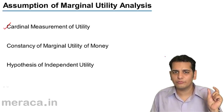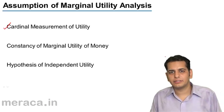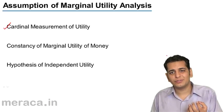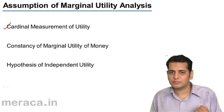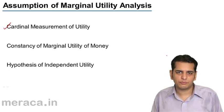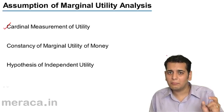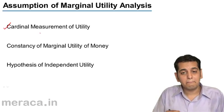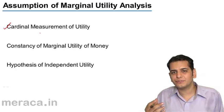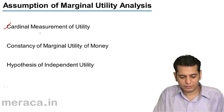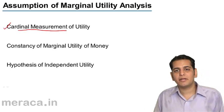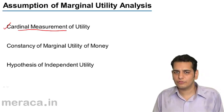Quantifying the level of utility — when you consume some commodity you derive some satisfaction from it, and when you put a number to that satisfaction level, we can say we are measuring the utility. It is called the cardinal measurement of utility.